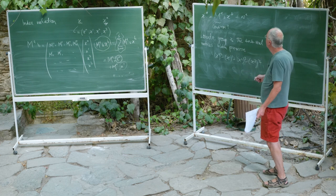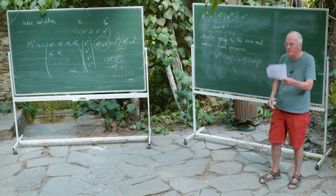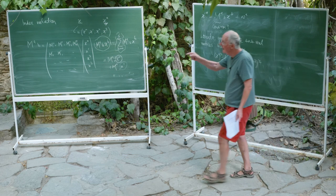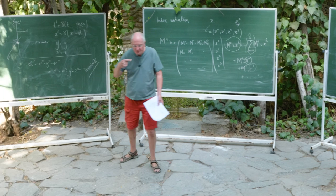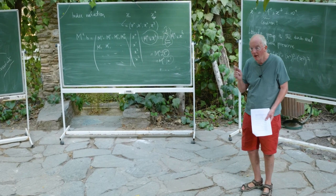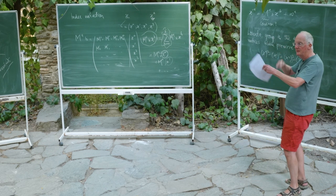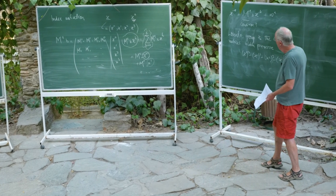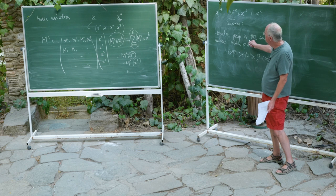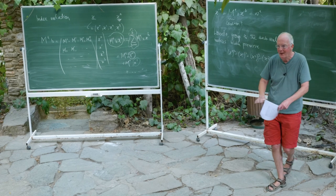That's not quite the full picture: the Lorentz group also includes spatial reflections and time reflections. So the Lorentz group includes the standard Lorentz transformations, spatial rotations, spatial reflections, time reflections. But I need to correct something I said: the Lorentz group does not include translations. Here are the translations — they're a separate piece. The bigger group that includes translations is called the Poincaré group.